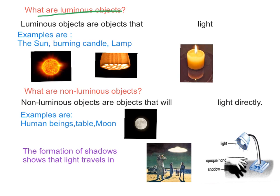What are luminous objects? Luminous objects are objects that emit light directly. Examples of luminous objects are the sun, the burning candles, and the lamp.